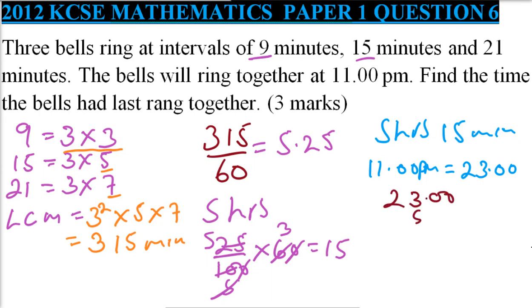23:00, we subtract 5 hours and 15 minutes. When you subtract, you carry one here. This will be 60 minutes. 60 minutes minus 15 gives you 45, and here we'll be left with 22. 22 minus 5 is 17. So this means the last time they rang together is 17:45, or 5:45 PM.